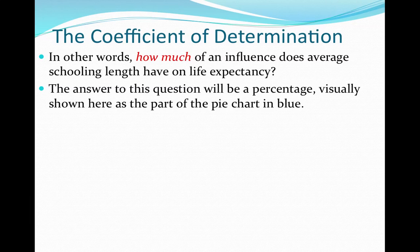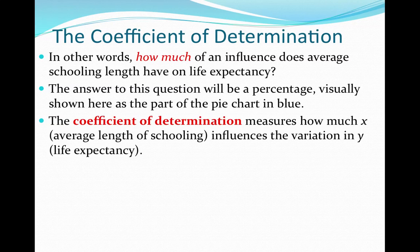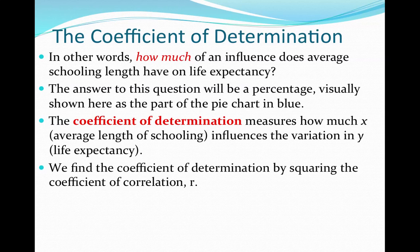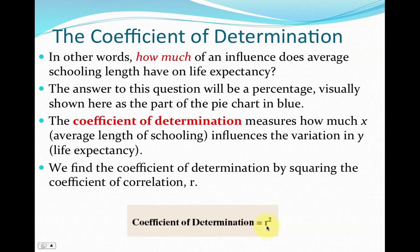The answer to this question will be a percentage, and visually it's shown in the pie chart as the blue section. The coefficient of determination measures how much x — in this case the average length of schooling — influences the variation in y, the life expectancy. We find the coefficient of determination by squaring the correlation coefficient r. So the coefficient of determination is simply r squared.